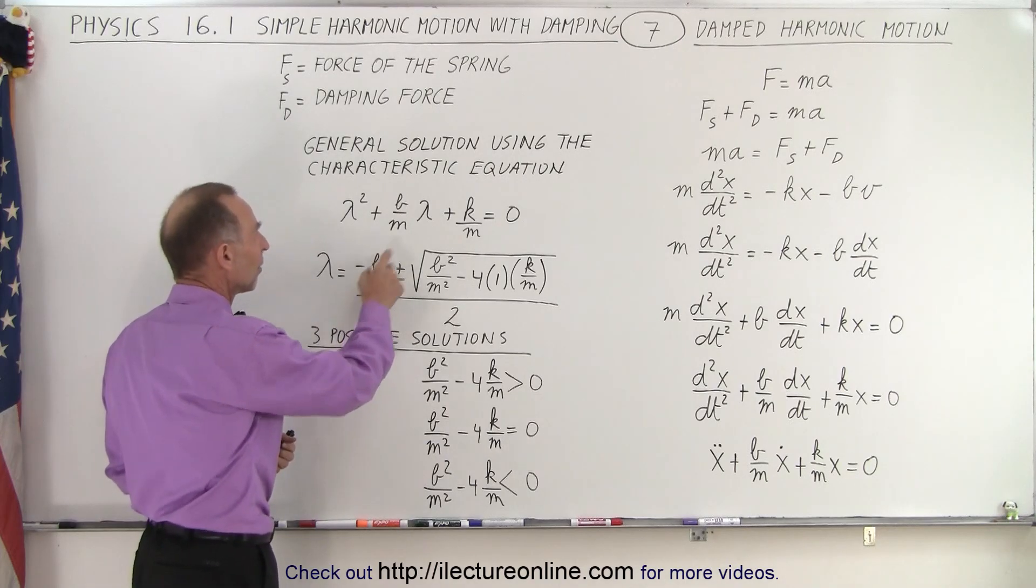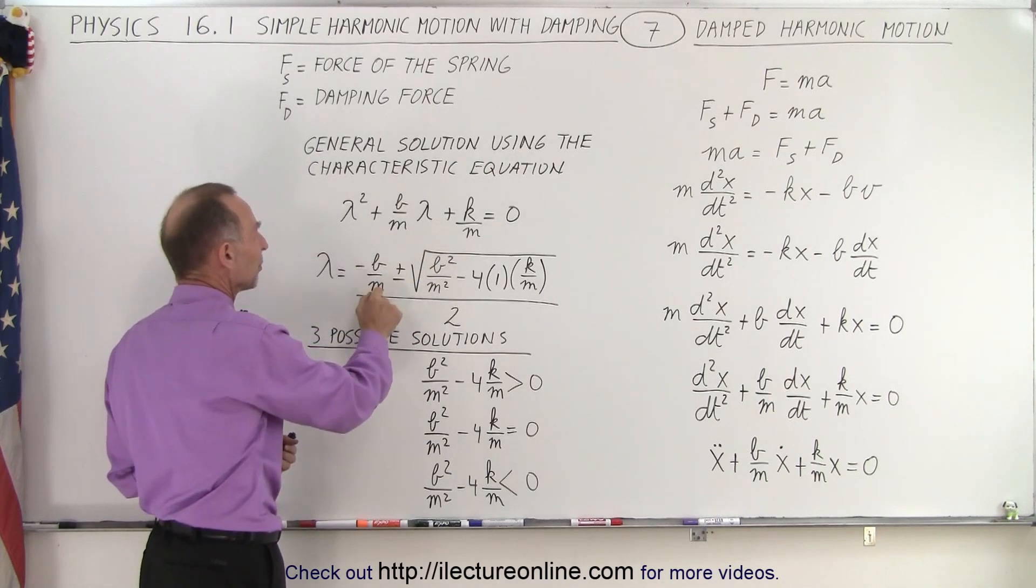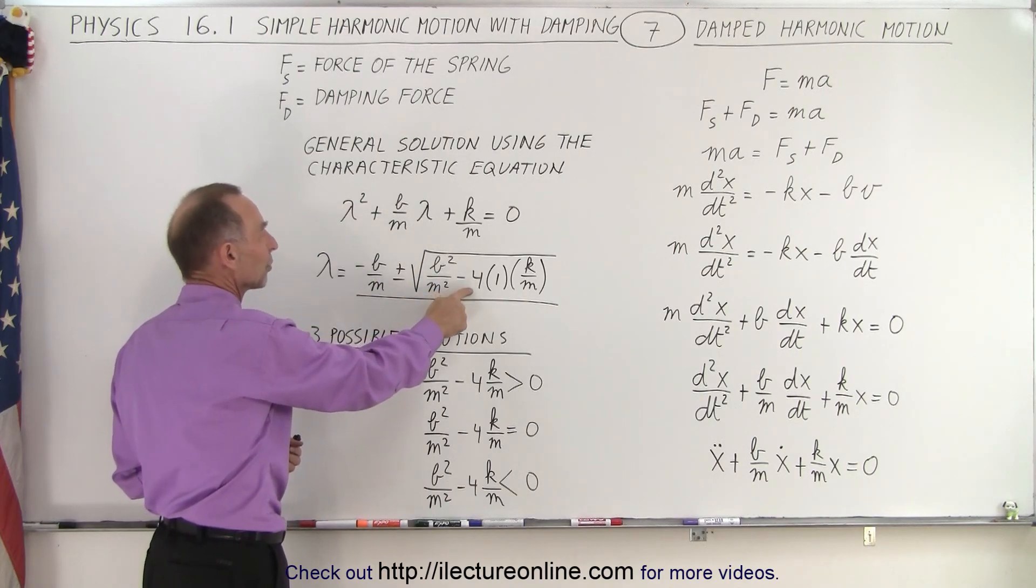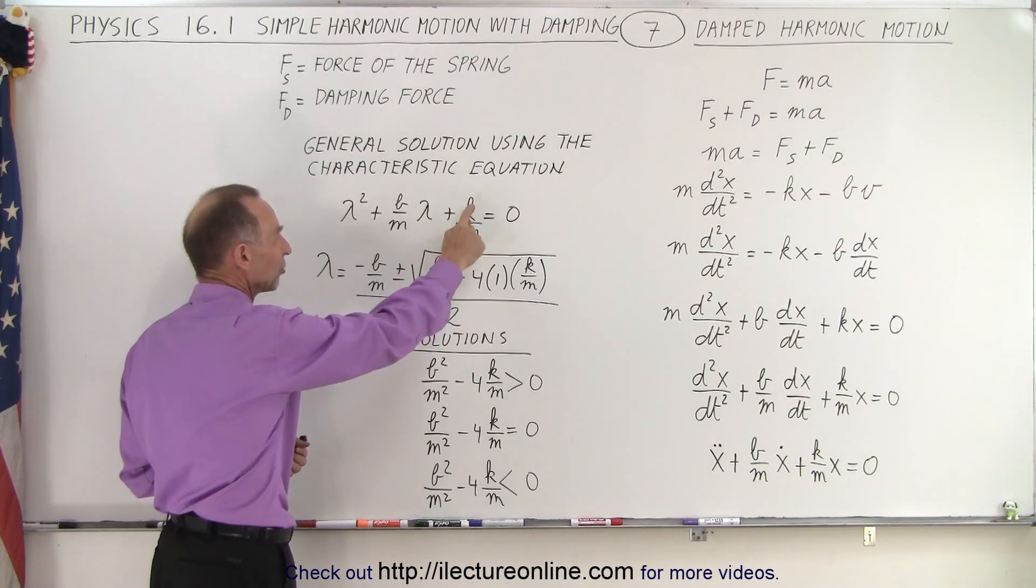So we have minus this term, so minus B over M, plus and minus the square root of this term squared, minus 4 times A times C, which is K over M.